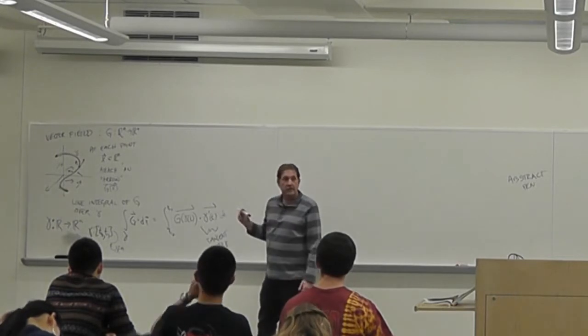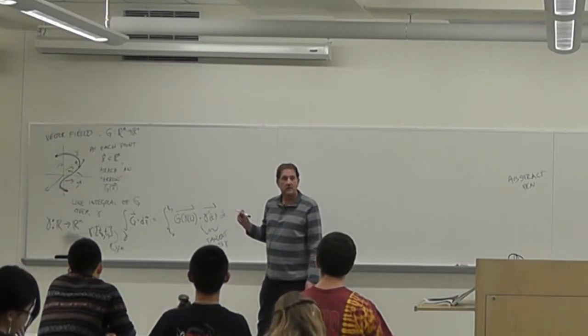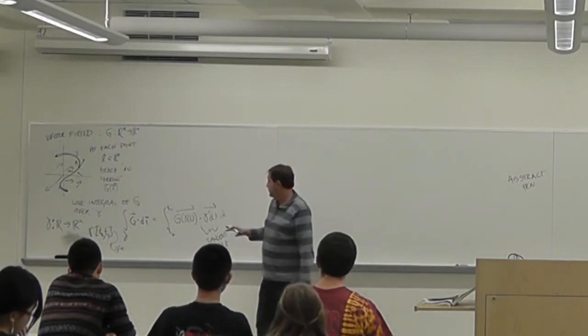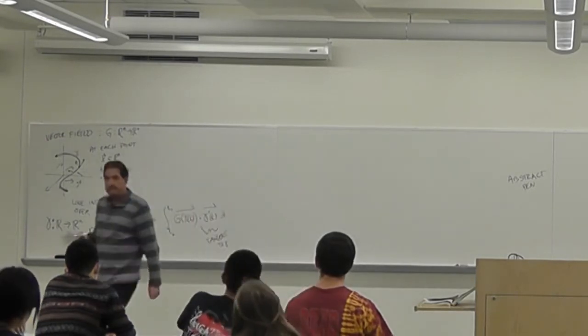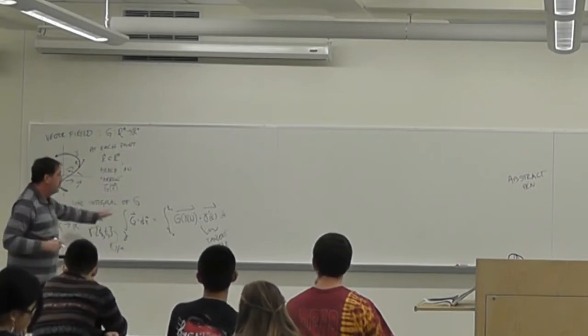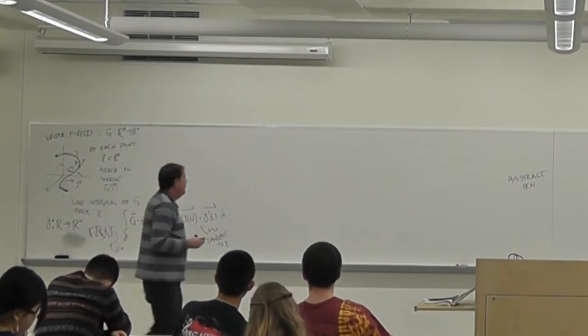Because this is the tangent to gamma — it's a vector because gamma is a curve. This is what we did last time. And we did a couple of examples of this and so on.